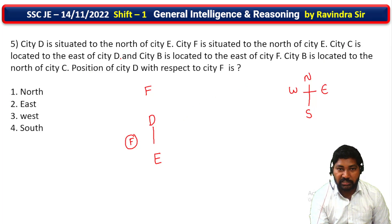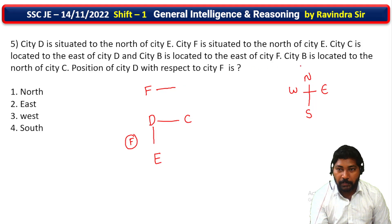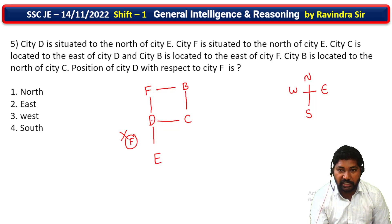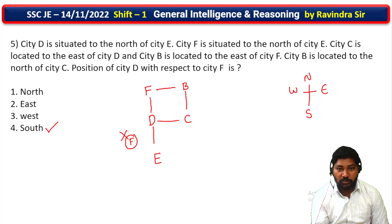Next question on directions. City C is located to the east of D. City B is located to the east of F, and B is located to the north of City C. Since F is to the east and B is to the north of C, B is common — placing F to the south. The question asks for the position of City D with respect to F. D is to the west of C, and F is placed accordingly. The answer is that D is to the south-west of F. This is easy to solve, with two possible configuration positions.